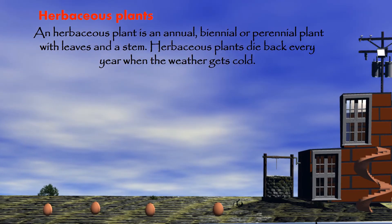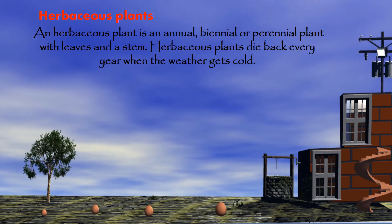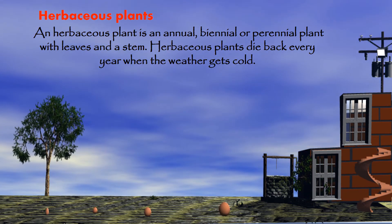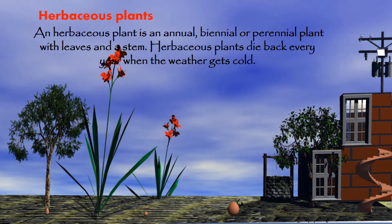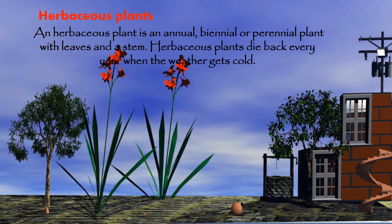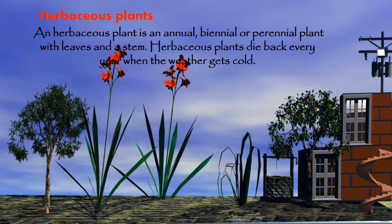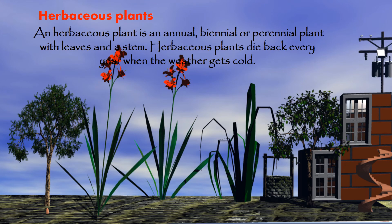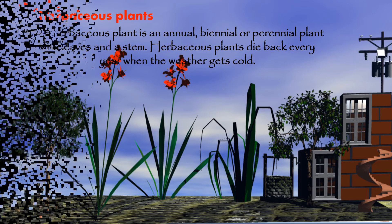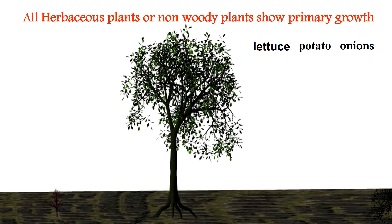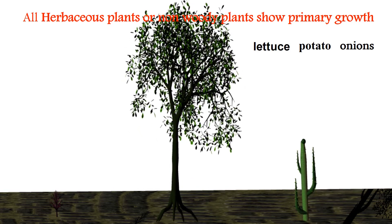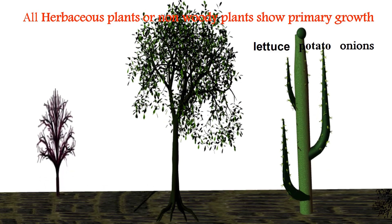What is the main difference between primary growth and secondary growth? All herbaceous plants — those which are annual, biannual, or perennial — show only primary growth. Annual means producing flowers once a year, biannual means producing flowers twice a year, and perennial means stems and leaves remain green throughout the year. Herbaceous plants grow up to two to three meters in height and die in winter season. All herbaceous plants are non-woody plants and show primary growth — for example, potato and onions.